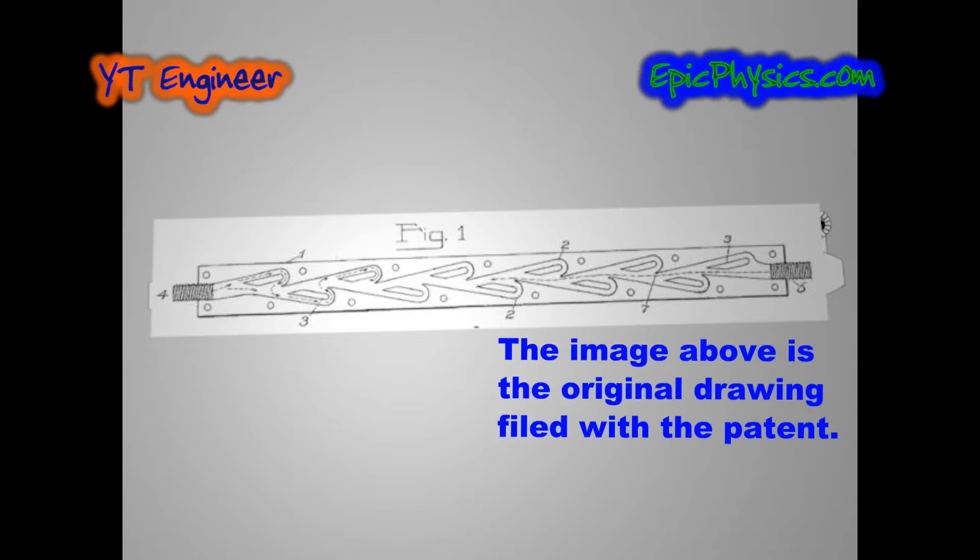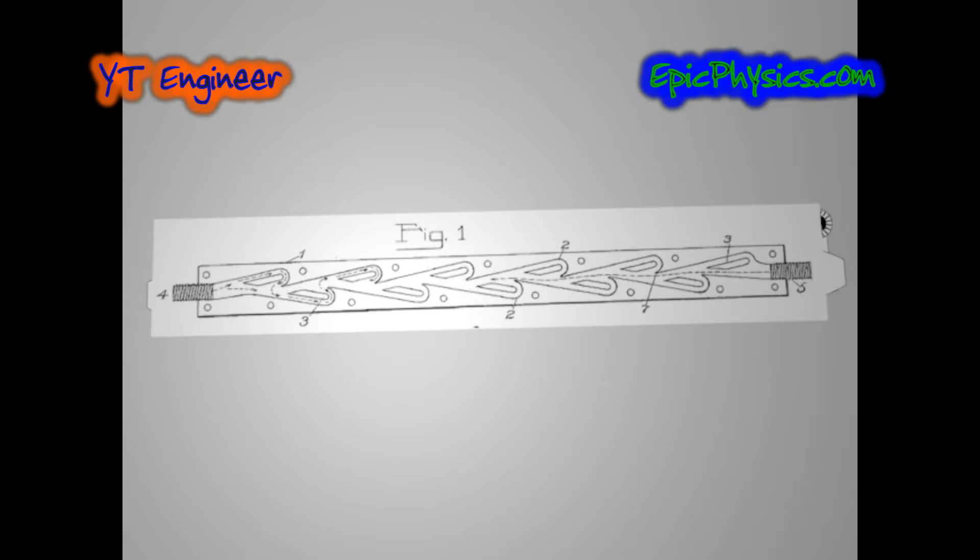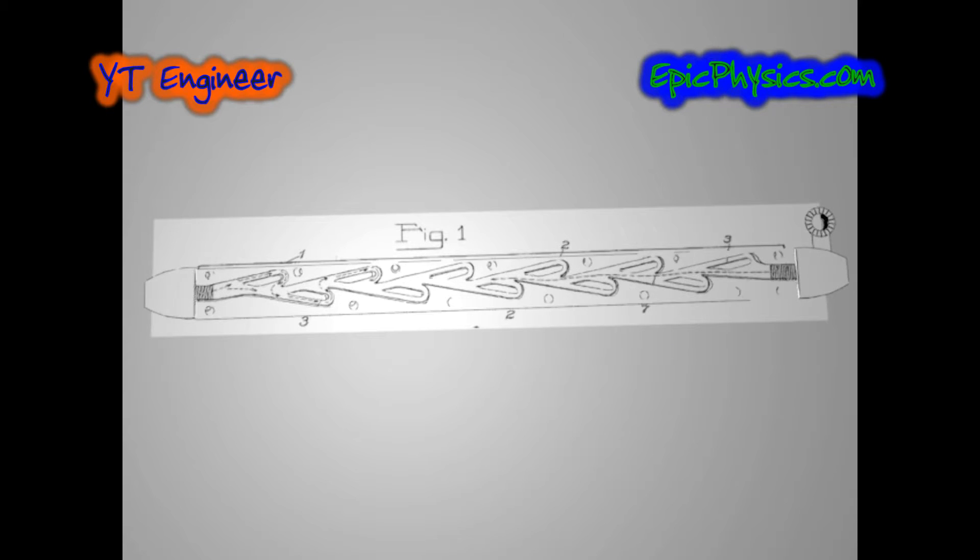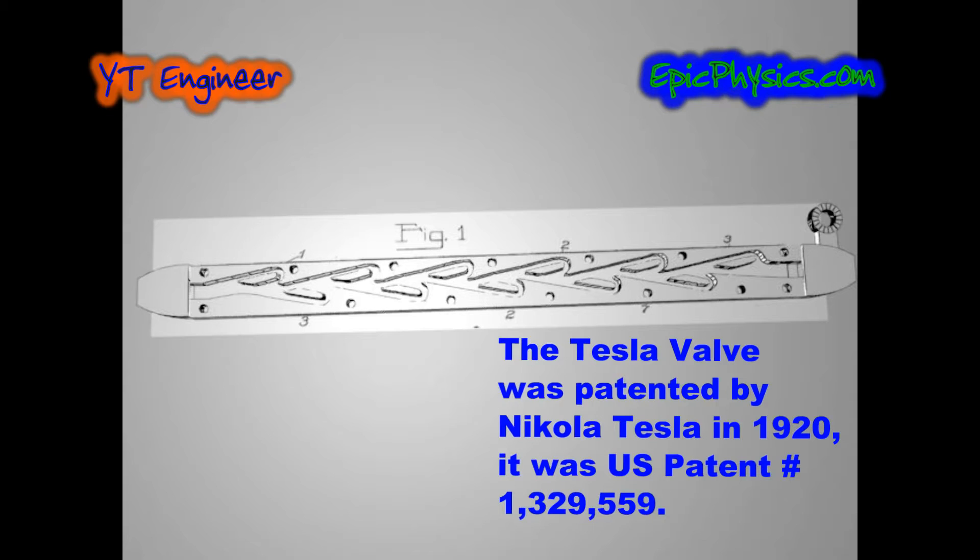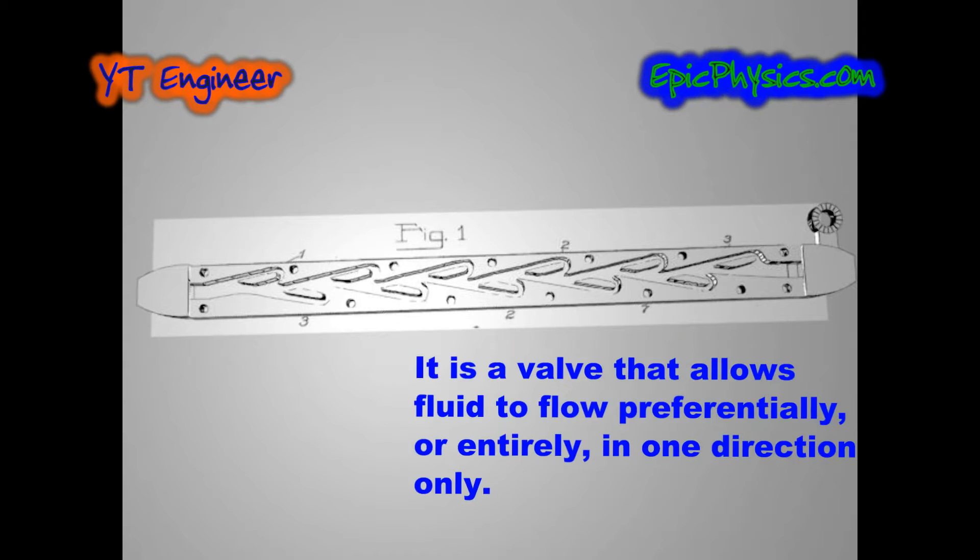The image above is the original drawing filed with the patent. The Tesla valve was patented by Nikola Tesla in 1920. It was US patent number 1329559.